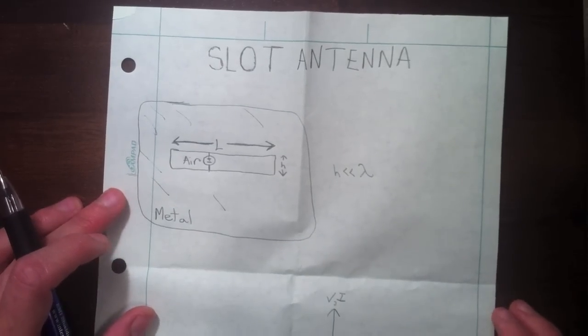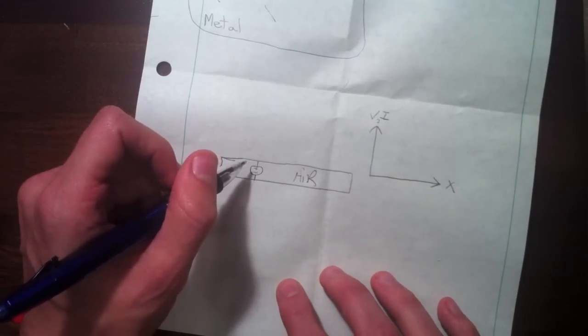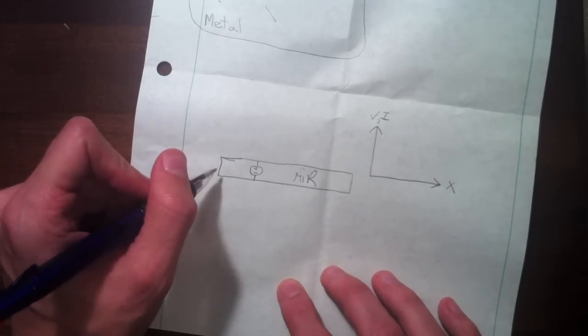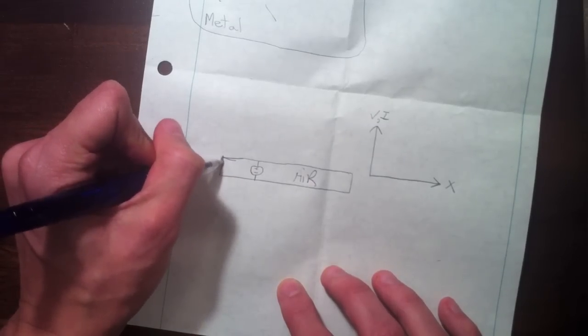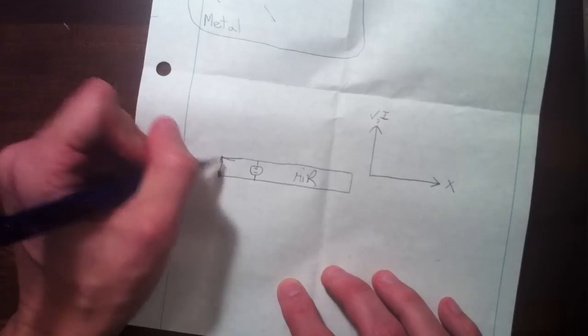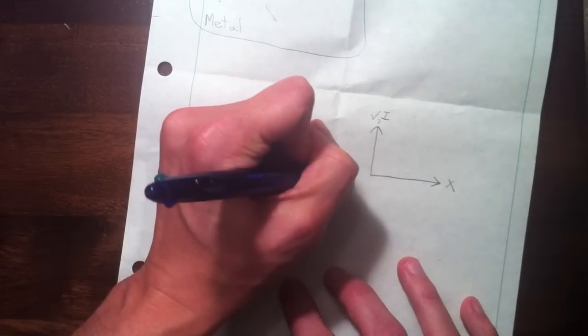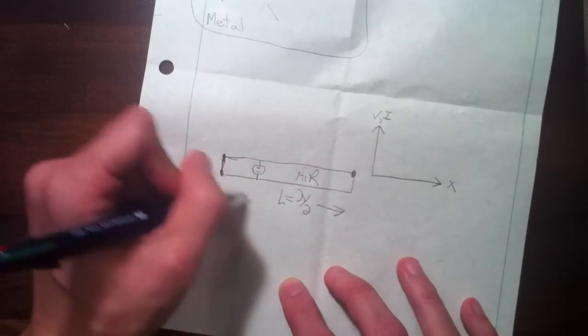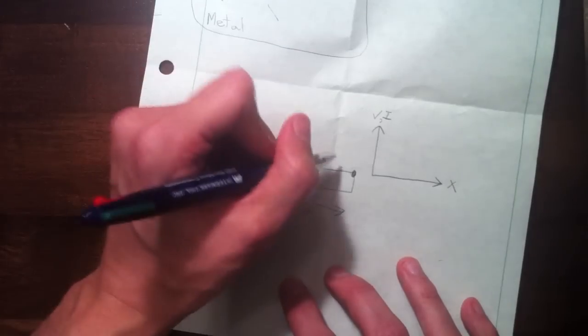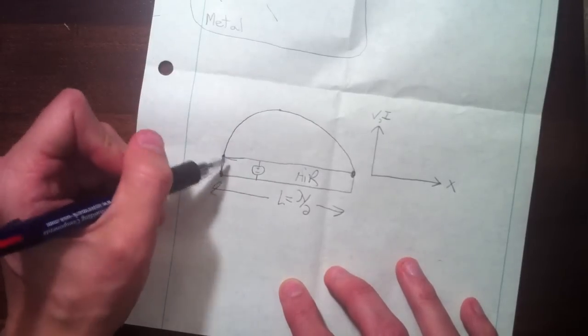Why does this radiate? We have ground plane everywhere else and air in this region. With a voltage source here, what is the voltage distribution across the slot? The voltage from here to here has to be basically zero. Because there's a short distance h between the two, let's assume that's zero. The voltage over here has to be zero as well. Assuming this is roughly a half wavelength, the voltage will peak in the center: peak in the center, zero on the ends.